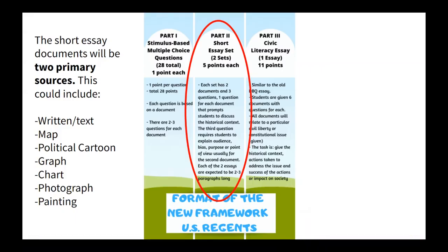As a reminder, there are three main parts of this exam. This is part two, the short essay sets. There's a first set which I already have a video about, and this is the second one. This short essay will include two primary sources. This could include something written, like a letter or a speech, or it could be a map, a political cartoon, a graph, a chart, a photograph, or a painting. They'll both be primary sources and you'll look at and discuss both of them in this short essay.